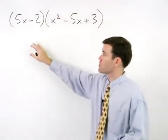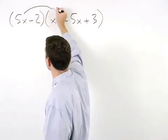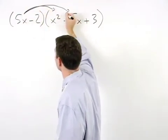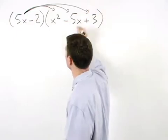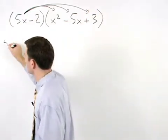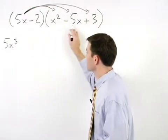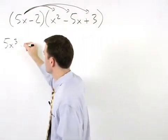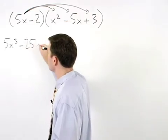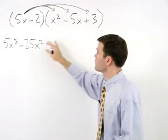So here we would first distribute the 5x through all three terms inside the parentheses to get 5x to the third minus 25x squared plus 15x.